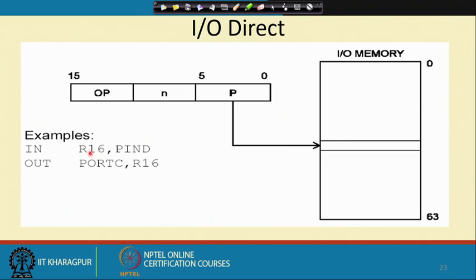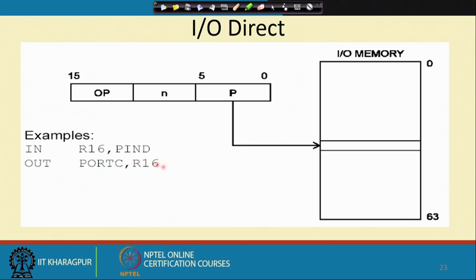IO indirect: you can say IN R16, PIND, where PIND identifies some port number. This is the opcode part, R16 is the register number, and there are 64 IO locations. From whatever port number we have identified, that port value will be put into the corresponding register R16. Similarly, OUT PORTC, R16 will output the R16 value onto port C — that port C will have some address and accordingly it will be selected.